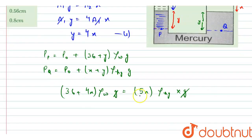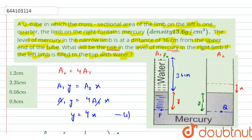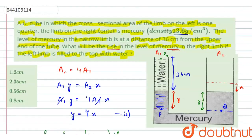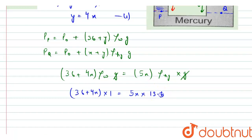And further on solving this, we will get 36 plus 4x into the density of water is 1 g per cubic centimeter equals to 5x into the density of Hg is given as 13.6.